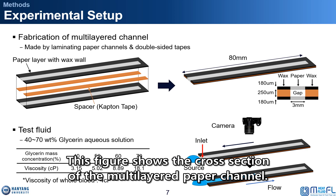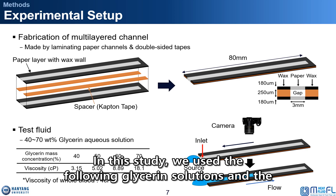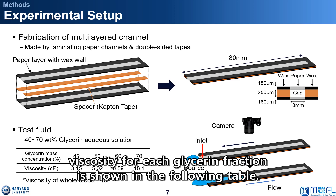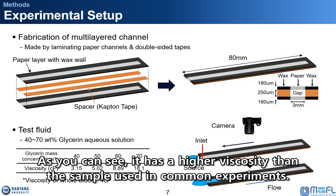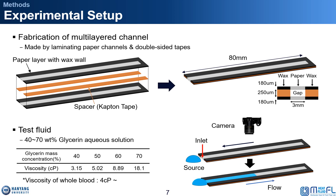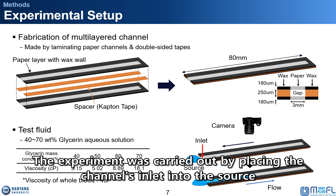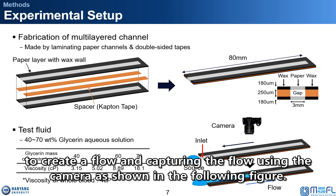This figure shows the cross-section of the multi-layered paper channel. In this study, we used glycerol solutions, and the viscosity for each concentration is shown in the following table. As you can see, it has a higher viscosity than the samples used in common experiments. The experiment was carried out by placing the channel's inlet into the source to create the flow and capturing the flow using a camera as shown in the figure.